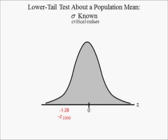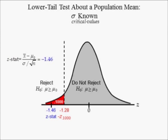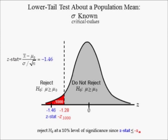Next, plot the critical value denoted negative Z subscript 0.100, equal to negative 1.28, on the number line. This value defines the reject the null hypothesis and do not reject the null hypothesis regions. The area to the left of this value is equal to the significance level of 0.1000, the red area. If the sample data yields a Z-stat equal to negative 1.46, it is plotted on the number line left of the critical value negative 1.28. Hence, we reject the null hypothesis at a 10% level of significance since the Z-stat is less than or equal to the critical value in a lower tailed test.